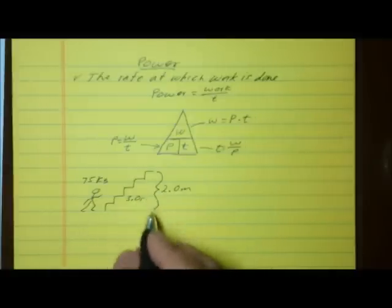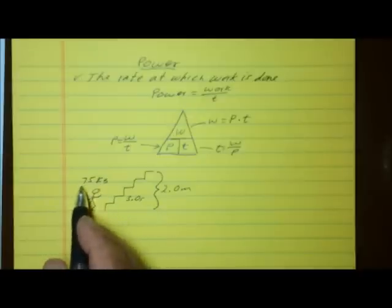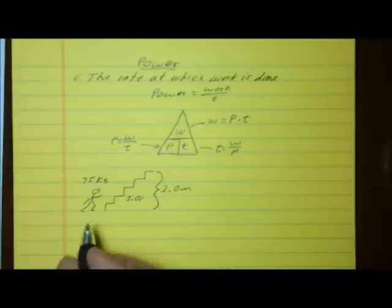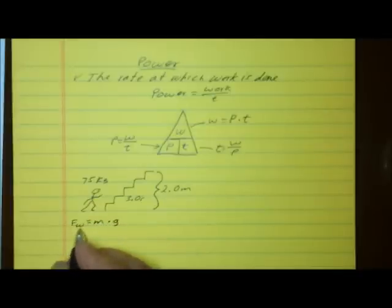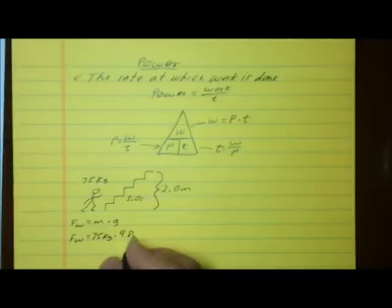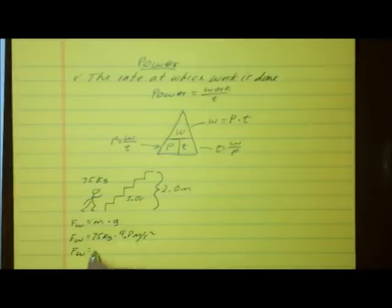To solve this problem, we first have to find your weight, because only the mass was given. Going back to the force of weight equation: force of weight equals mass times gravity. The mass is 75 kilograms and the acceleration due to gravity is 9.8 meters per second squared. Rounding to 10, that gives us 10 times 75, which equals 750.